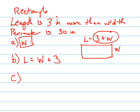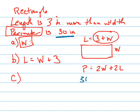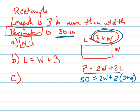Part C says write an equation to find the width of the rectangle. We're going to have to use the perimeter, which is 30. So let's write: perimeter equals 2W plus 2L. Now let's substitute these values in. We know the perimeter is 30, so I put 30 in for the perimeter. Then I substitute 3 plus W in for the length and leave 2W there for the width. That way the only variable I have is W.